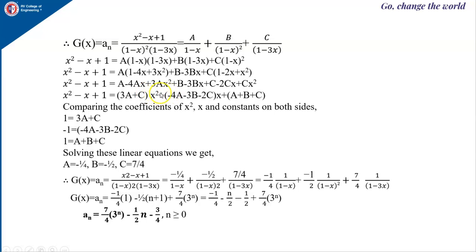Writing coefficients: for x², we get 3A + C; for x, we get −4A − 3B − 2C; and constants give A + B + C. Comparing both sides: 1 = 3A + C, −1 = −4A − 3B − 2C, and 1 = A + B + C. Solving these linear equations gives A = −1/4, B = −1/2, and C = 7/4.